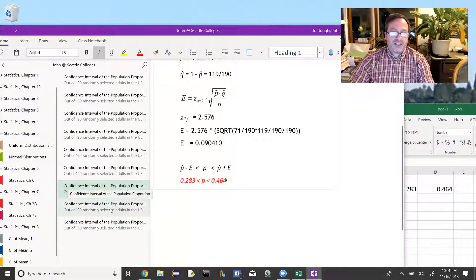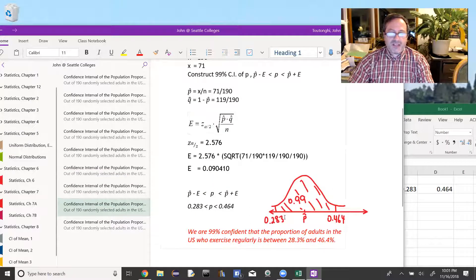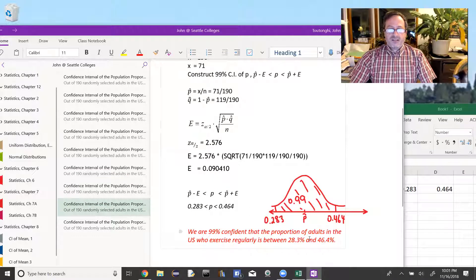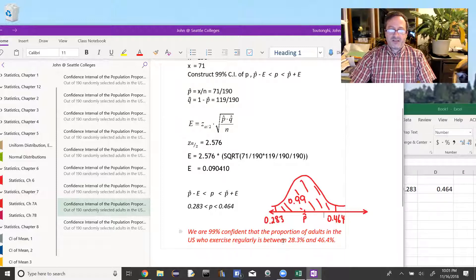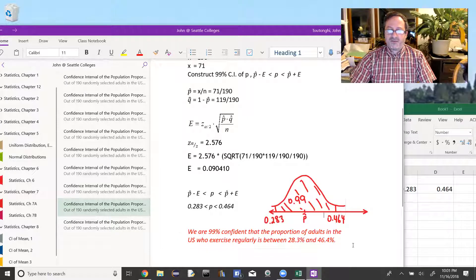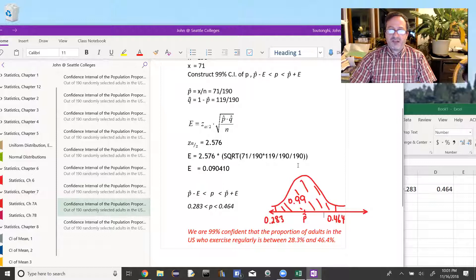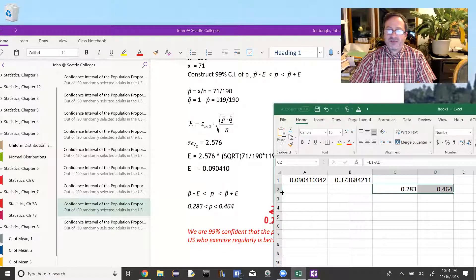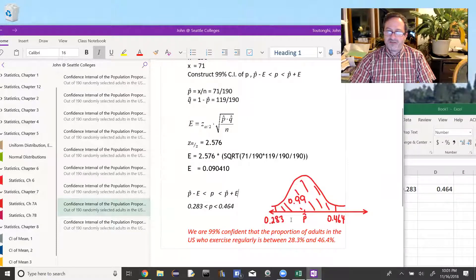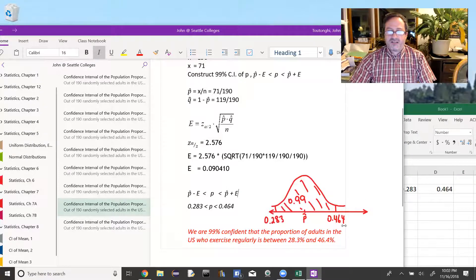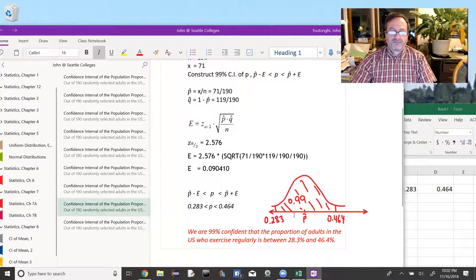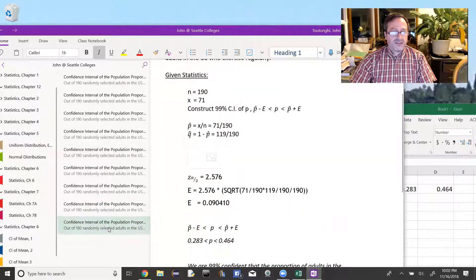How do we say this? We say we are 99% confident that the proportion of adults in the United States who exercise regularly is between 28.3% and 46.4%. In our picture, the original picture I drew was with Z scores. In the picture for the proportion, we would have p-hat right in the middle. That would be the 37%. And then with 99% of the data in between those values, p-hat minus e to p-hat plus e would go from 0.283 up to 0.464.